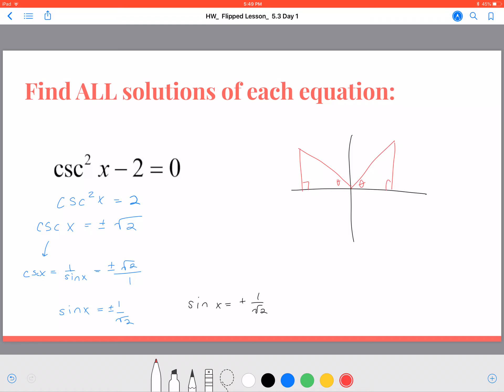And if I want to know what that is, it's the opposite side and the hypotenuse. And hopefully that looks like a familiar angle of pi over 4 and 3 pi over 4.